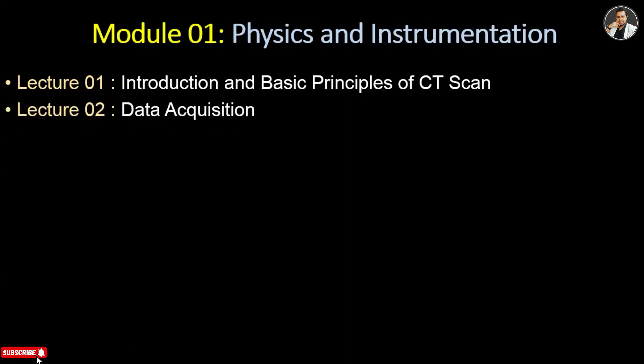Lecture 2 is about data acquisition. In this tutorial you will learn how X-rays pass through the body, what materials are involved in making a CT Scan image, and what the process is. Lecture 3 is about image reconstruction — you will learn about the process of image reconstruction, how raw data becomes image data, and how we can see a CT Scan image on the monitor.